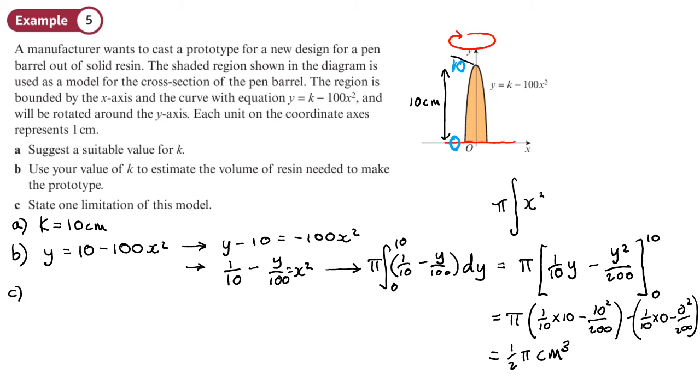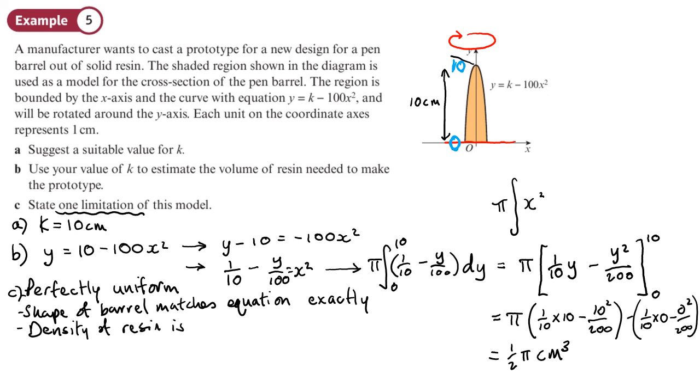And a nice easy part in part C. State 1 limitation, where there's loads, you could say that you're assuming that this is perfectly uniform in terms of this rotation around the y-axis. You're assuming that the shape of the pen, or the shape of barrel, matches equation exactly. We're assuming as well that the volume of resin is uniform throughout the whole thing. So density of resin is uniform. They're the main ones I can think of. You might be able to think of some others.